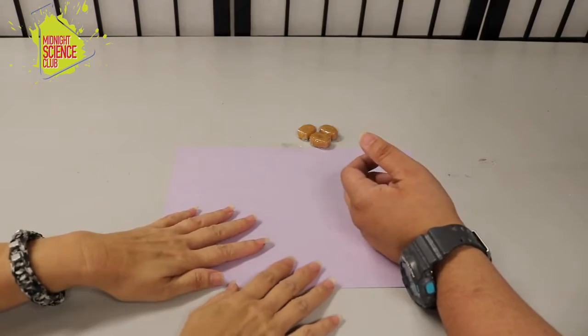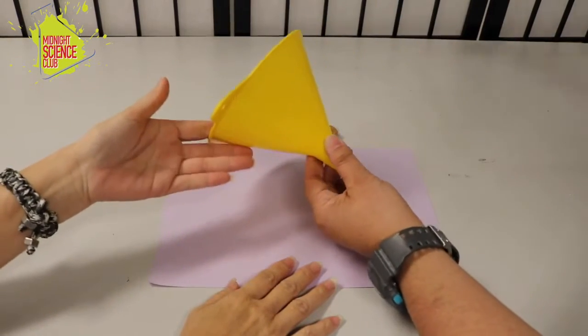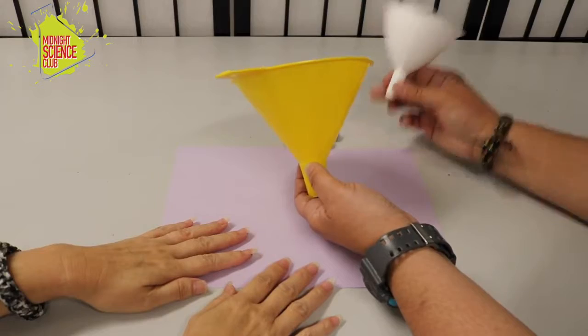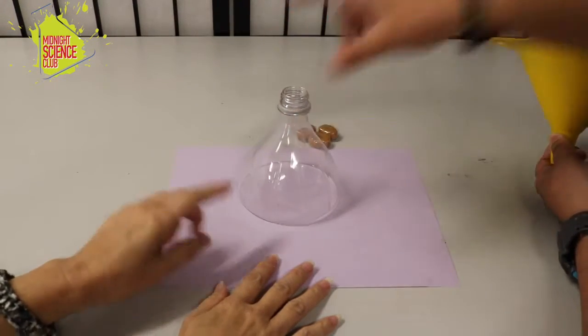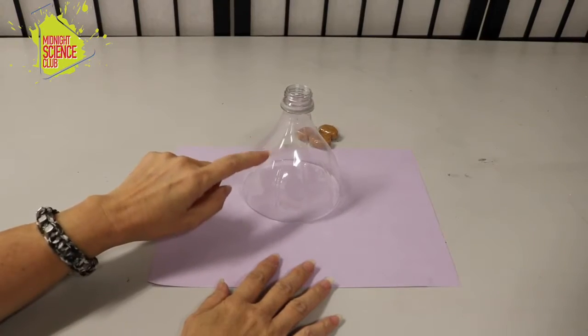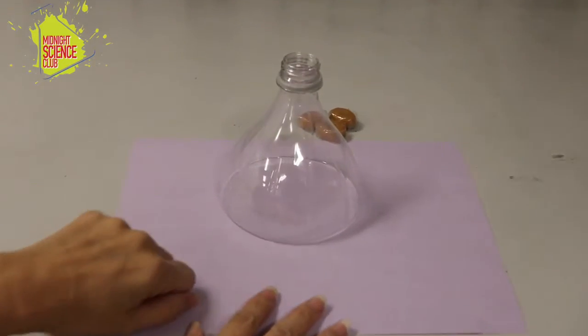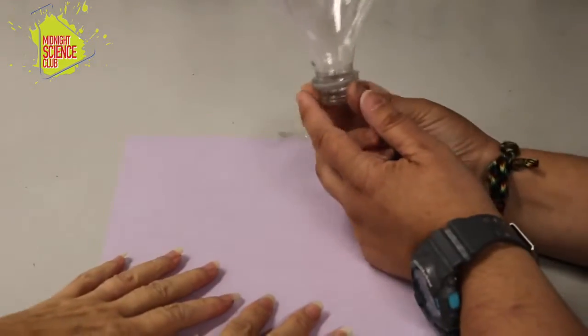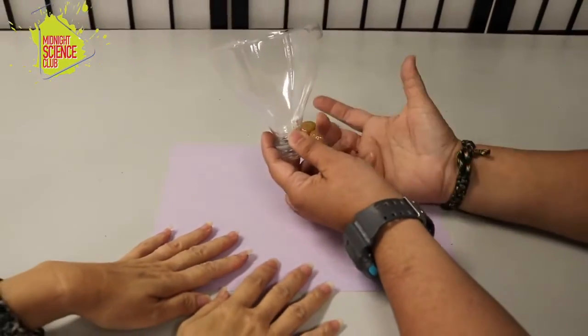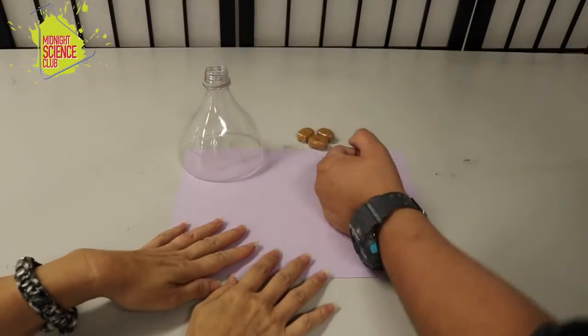The first thing that you're going to need is going to be a funnel. So you may have a funnel that looks like one of these. Any funnel will work. Today though for our activity we're going to be using this. What does that look like Mel? That looks like the top of a bottle. That is exactly what that is. So the reason we're using this, it kind of looks like a funnel, is we wanted it to be clear so you can see what's going on inside. So we're going to use this as our funnel.